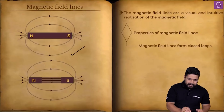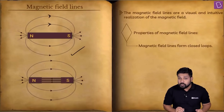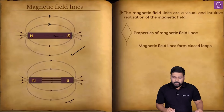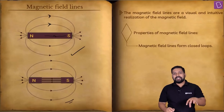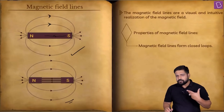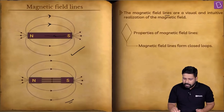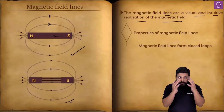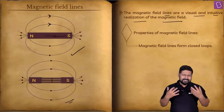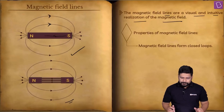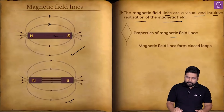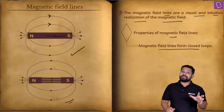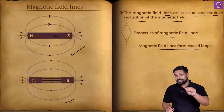Outside the magnet, the magnetic field runs from north to south, and inside it goes from south to north — you can see the diagram here. Magnetic field lines are a visual and intuitive realization of the magnetic field — a visualization of how you see the field. The first property: magnetic field lines form closed loops, which is different from electric field lines.